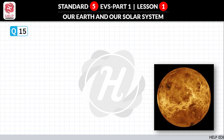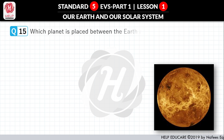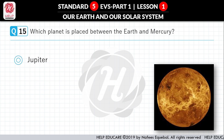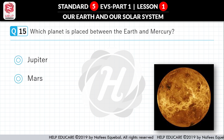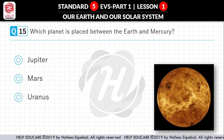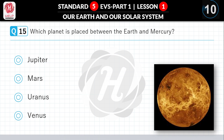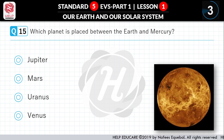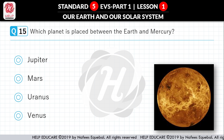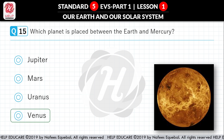Question No. 15: Which planet is placed between the Earth and Mercury? First option: Jupiter. Second option: Mars. Third option: Uranus. Fourth option: Venus. Correct answer is Venus.